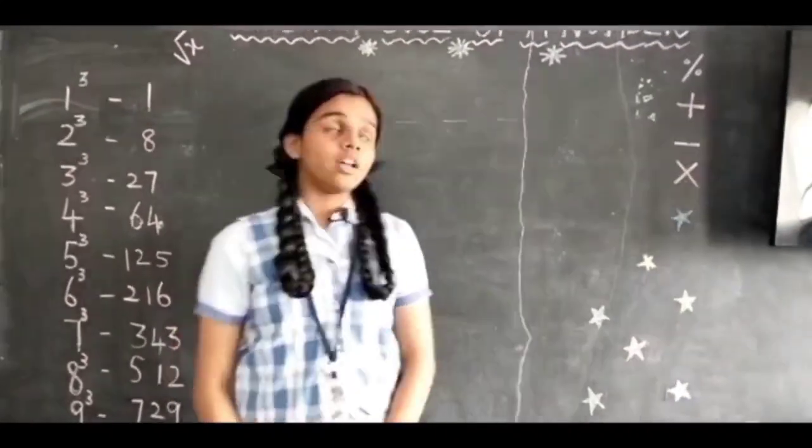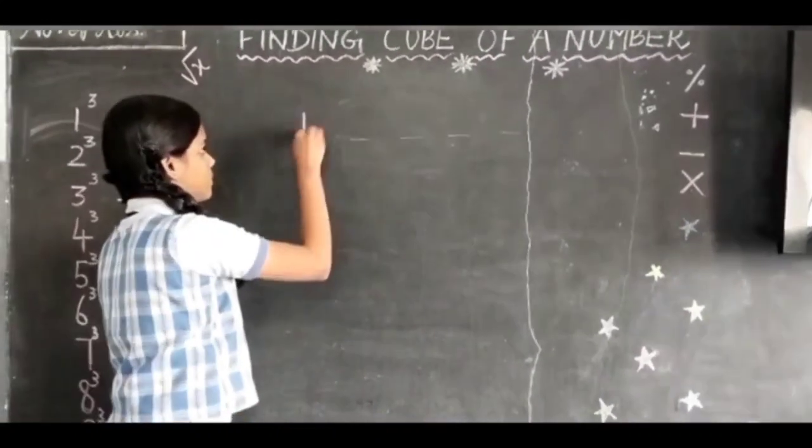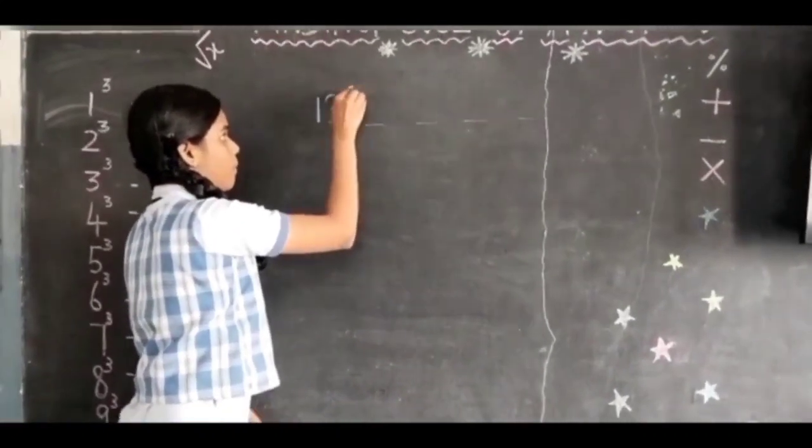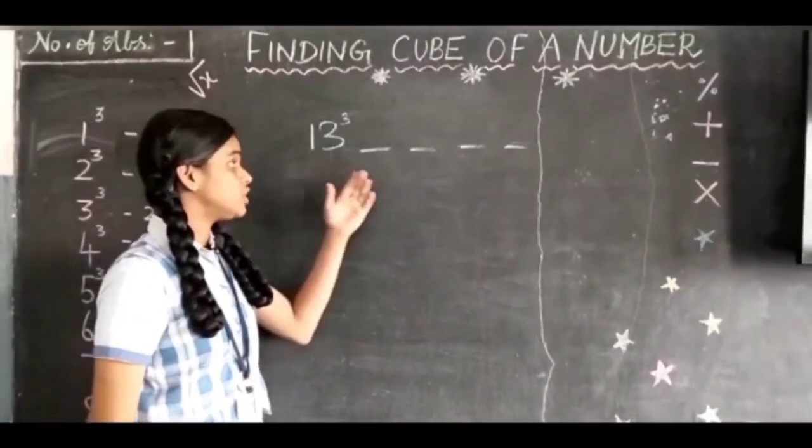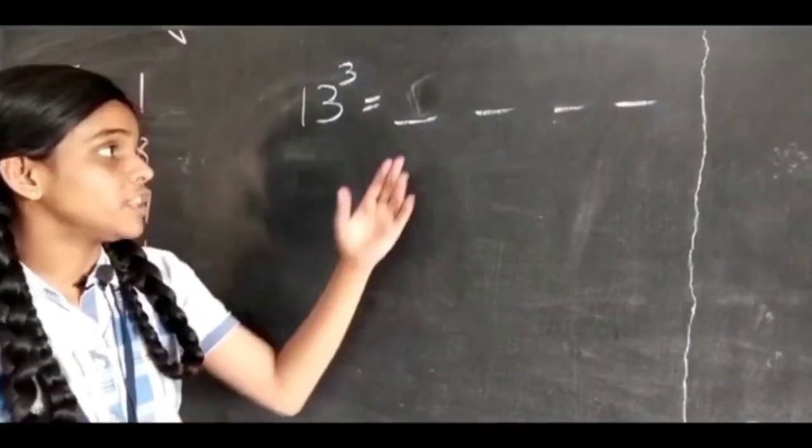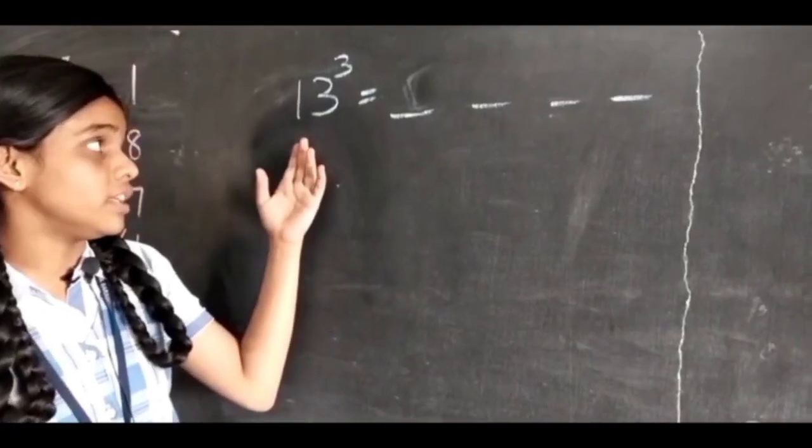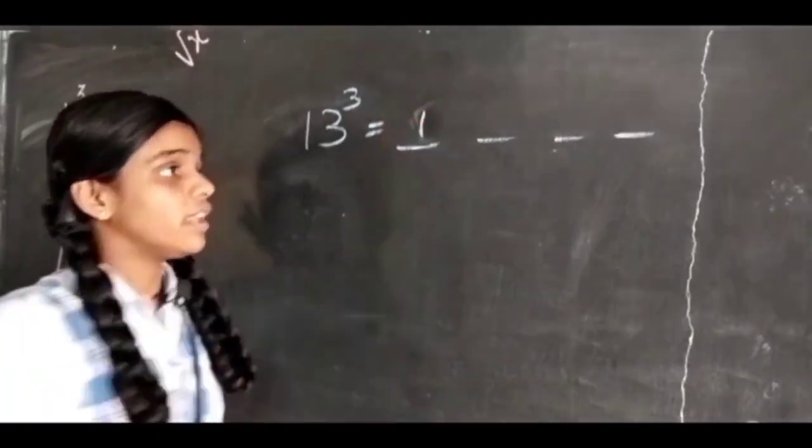For finding cube of 13, our answer is going to divide into four parts. The first part will be the cube of first number - that is, cube of 1 is 1. The last part will be the cube of last number - the cube of 3 is 27.